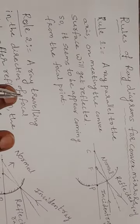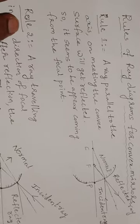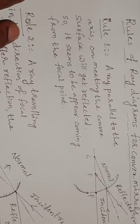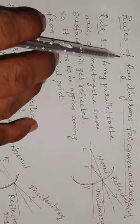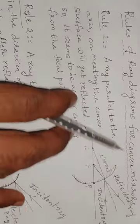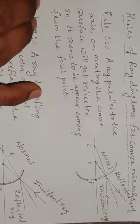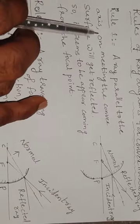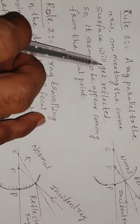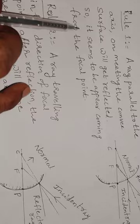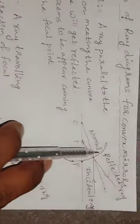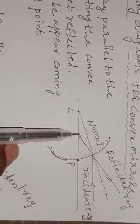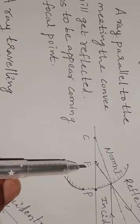Good morning students. Yesterday we discussed ray diagrams for concave mirrors. Now we will discuss rules of ray diagrams for convex mirrors. There are three rules. A convex mirror is also called an outward mirror or a diverging mirror. This is the principal axis, this is the pole, this is the focal point, and this is the center of curvature.